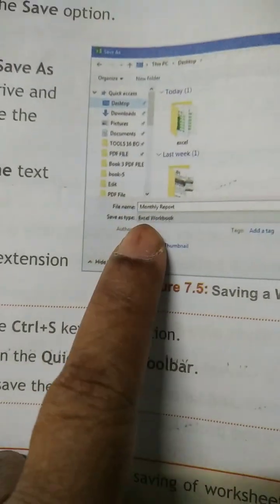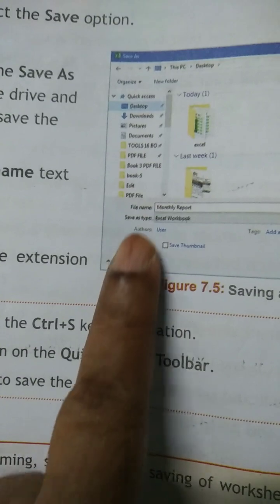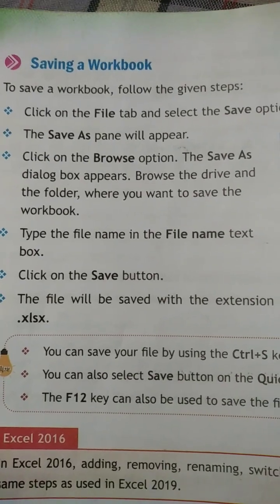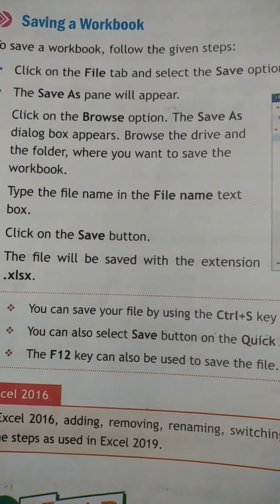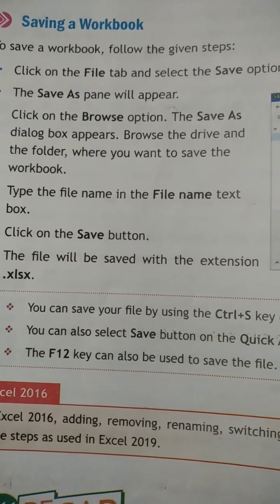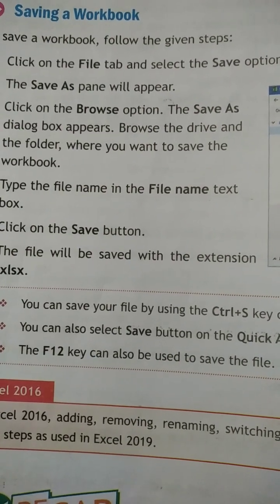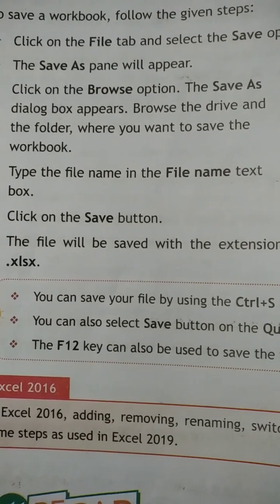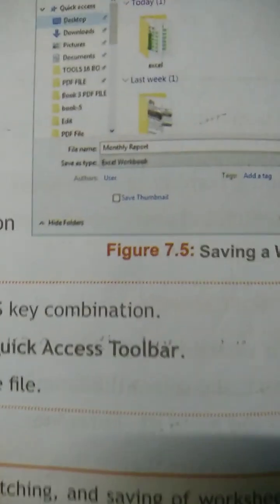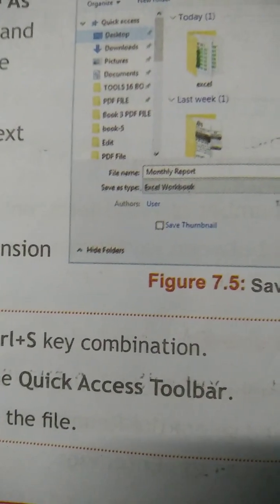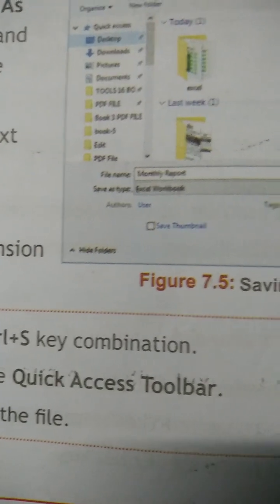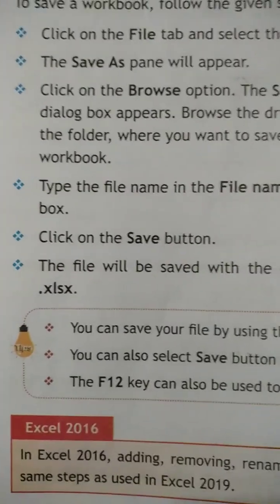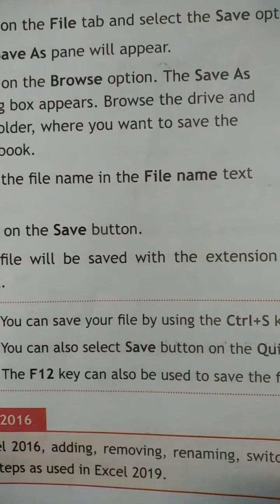When the Save As dialog box appears, you can see the file name field and the Save As type. Browse to the drive and folder where you want to save the workbook. Open the folder you want to save to, then type the file name in the file name text box, select the drive and folder, and click Save.